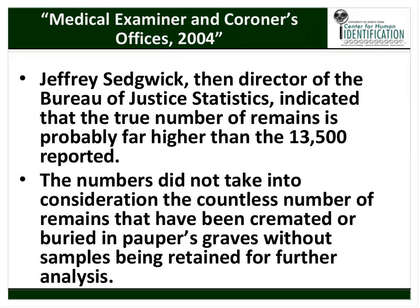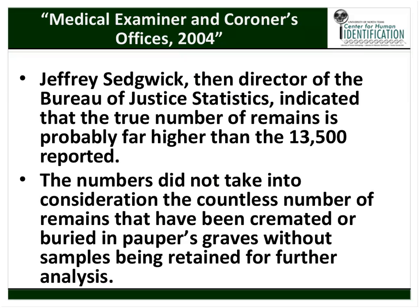The then-director of the Bureau of Justice Statistics acknowledged that the 13,500 figure was probably a significant underestimate, related to bodies previously buried or cremated. Of the 13,500 identified, less than half had entries in NCIC. Of those with NCIC entries, 25% were known homicides and at least an additional 25% were also likely homicide victims. The salient take-home message is that a significant portion of unidentified decedents in this country are most likely murder victims — and it's nearly impossible to start a murder investigation if you don't know who the victim is.